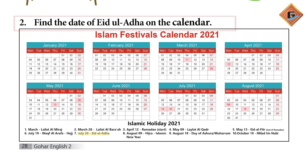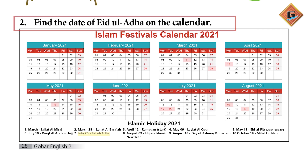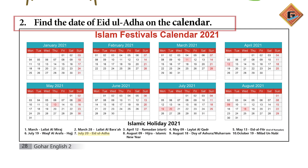Our next exercise is: Find the date of Eid Al-Azha on the calendar. This is an Islamic festival calendar that is given to us. If you can see the dates on the screen, they are highlighted — the boxes are colored in red.